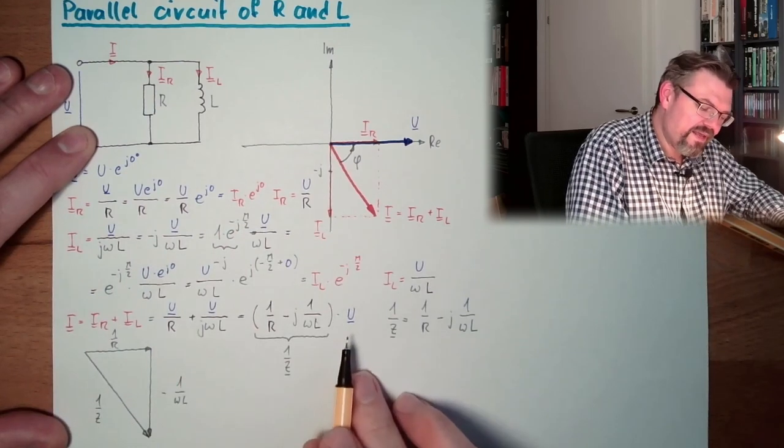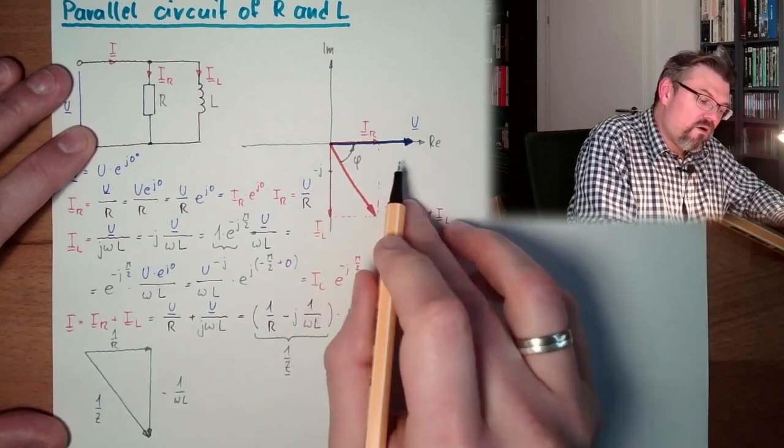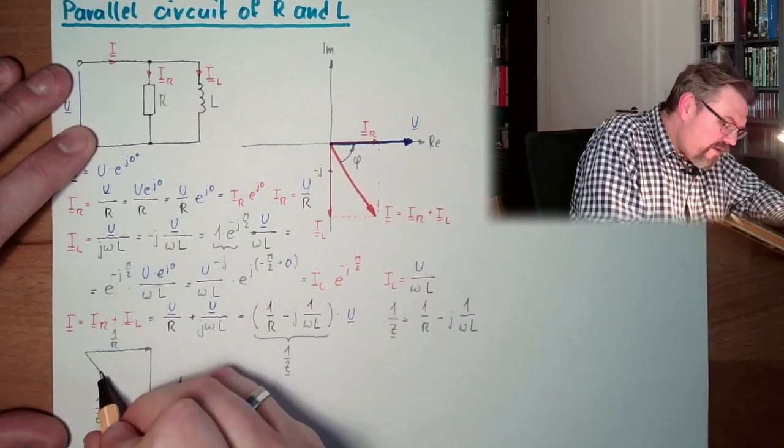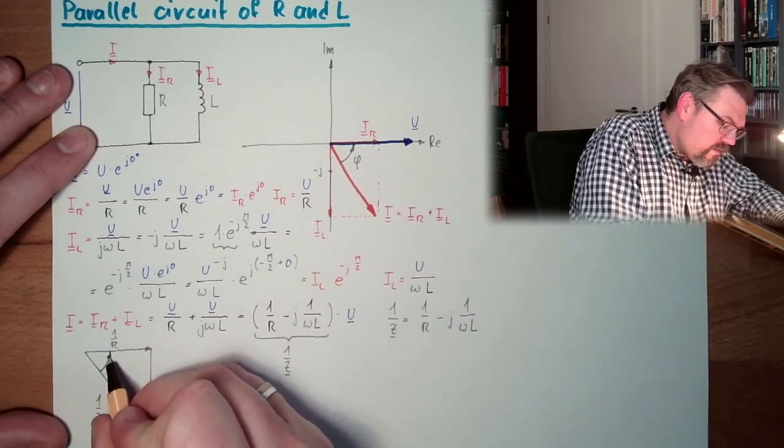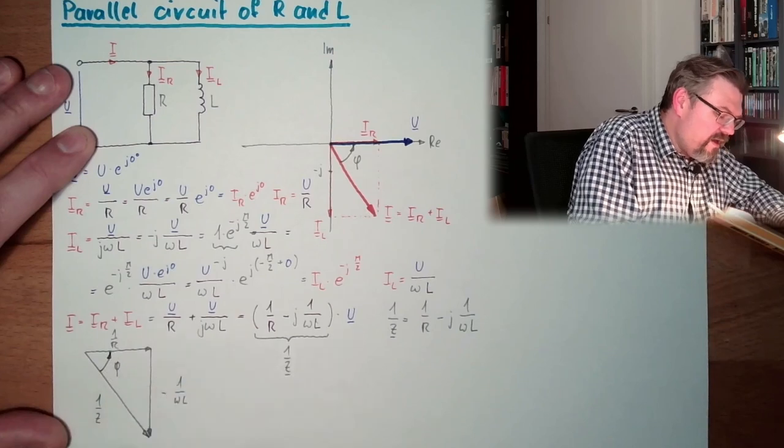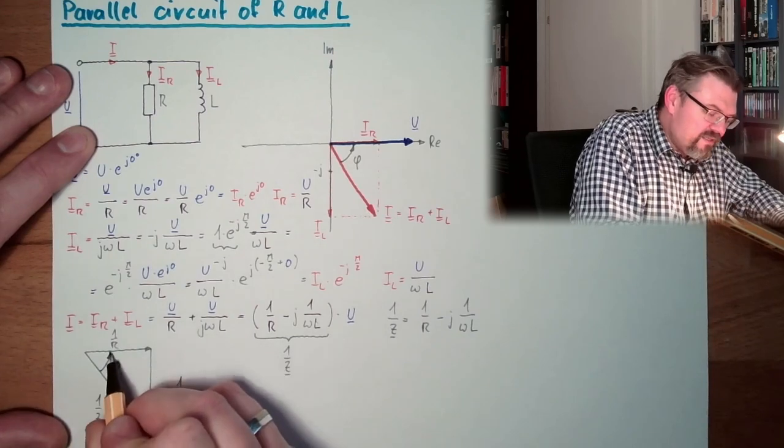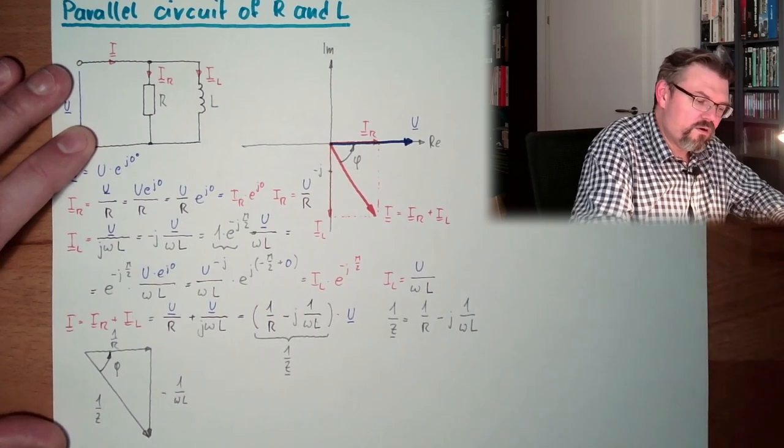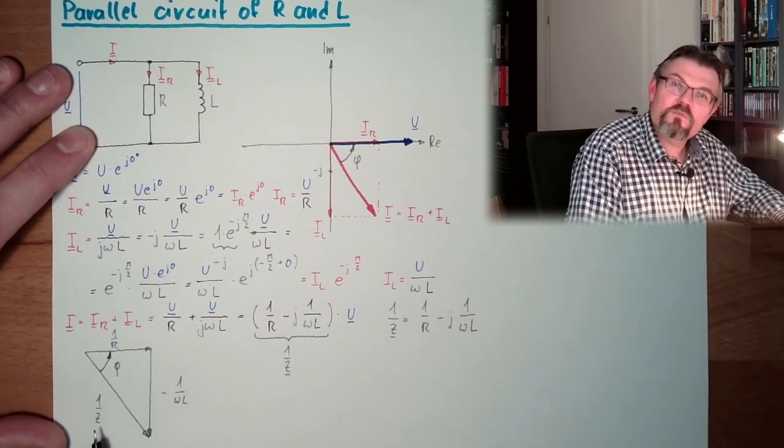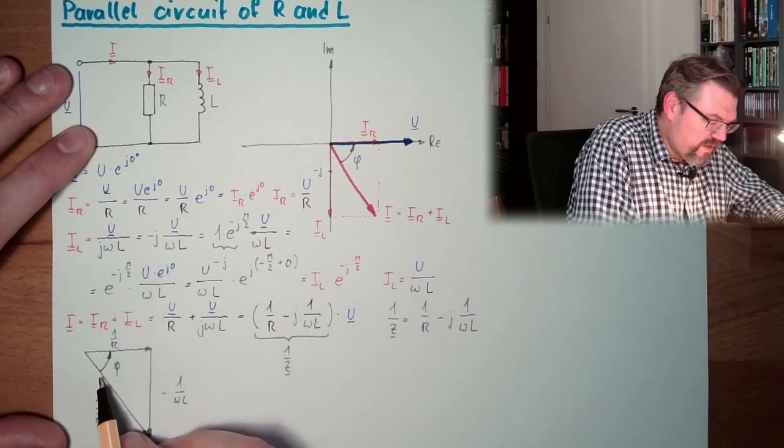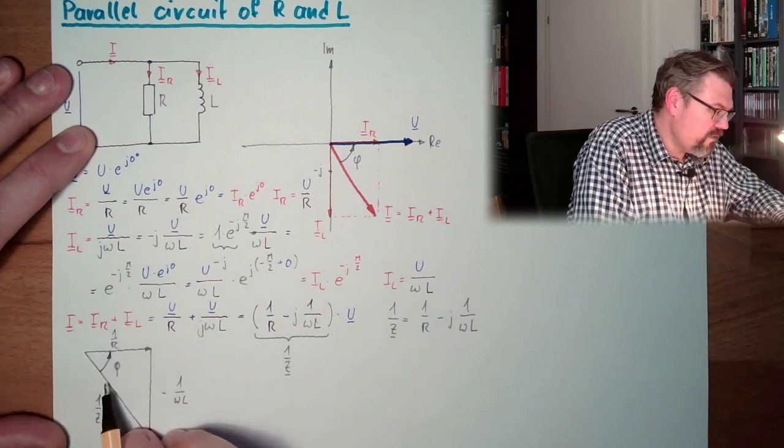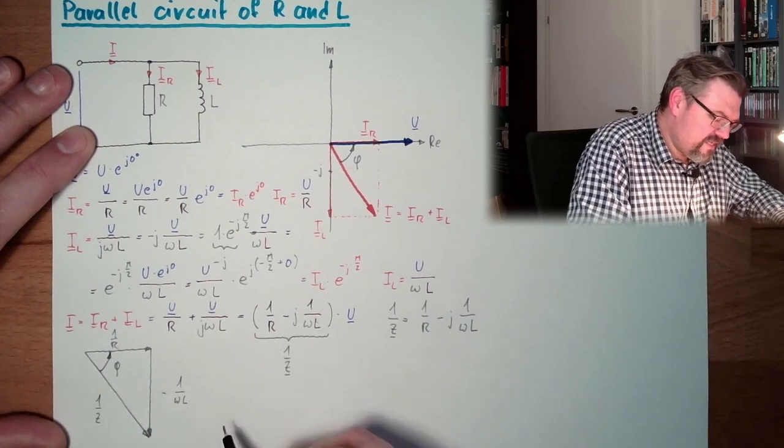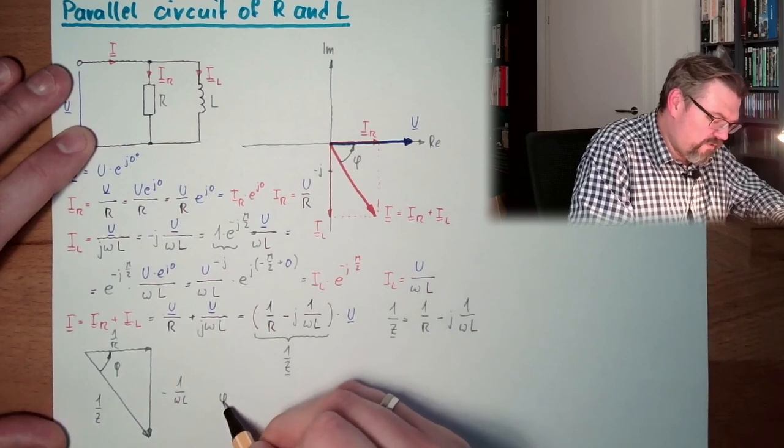And we are scaling our voltage with this. So here we have again the angle phi. Attention! It's going in this direction, because we have here turned. We have not Z, we have 1 divided by Z. So we are going from here to here.